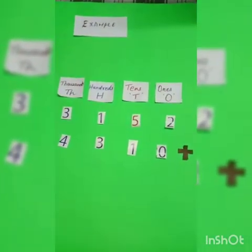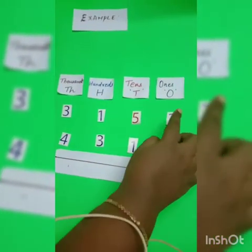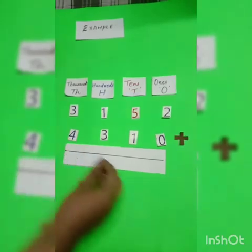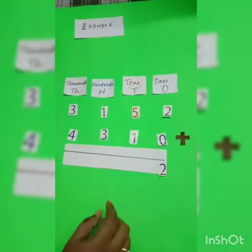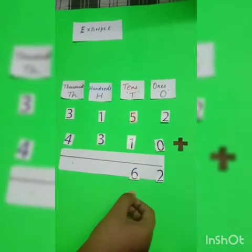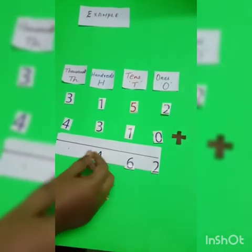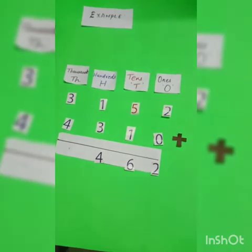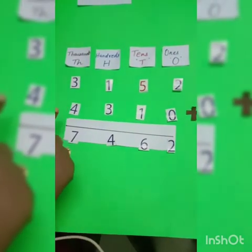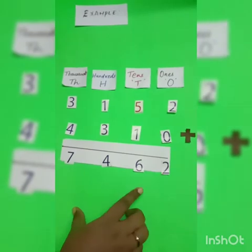We always start by adding from the ones column. So, we add 2 plus 0 to get 2. Next, 5 plus 1 equals 6. Now, 1 plus 3 equals 4. Finally, 3 plus 4 equals 7. Hence, the sum of 3152 and 4310 is 7462.